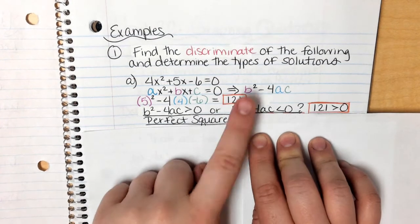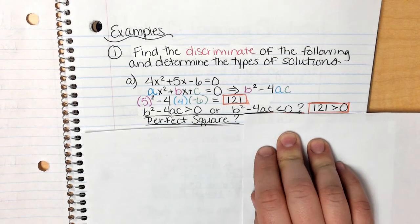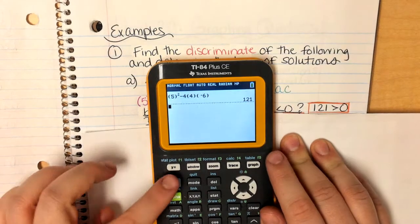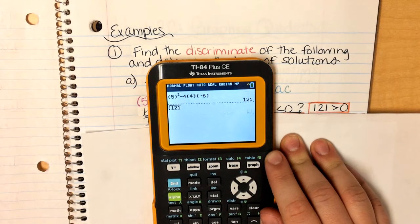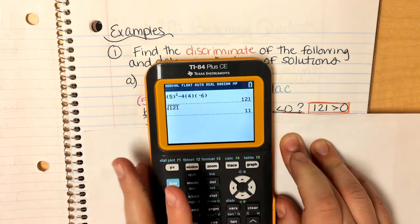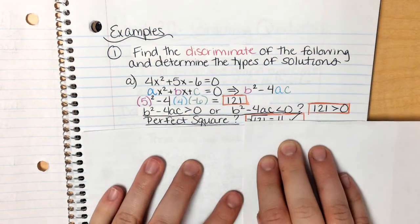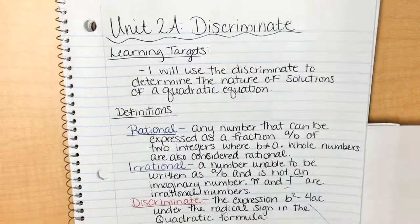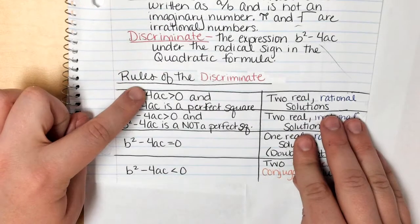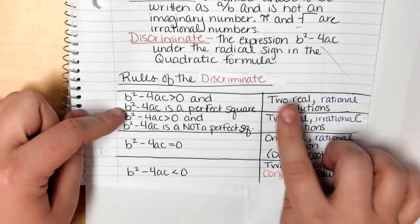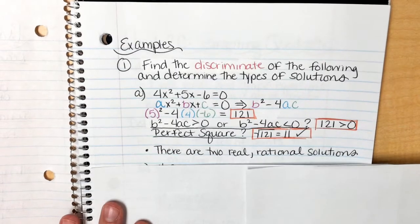So I'm going to put in the square root of 121. I click enter. It gives me a whole answer. So it is considered a perfect square. So again, going back to my little chart down here, it's greater than 0 and it's a perfect square. That means that it has two real rational solutions.